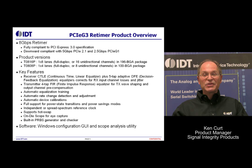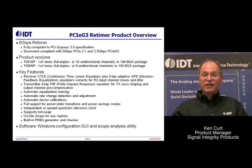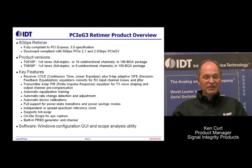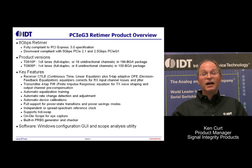At 8 gigabits per second, all these margins become very important. Our device has full support for automatic power saving states such as the L0S state that Intel has been promoting heavily. If the root complex and endpoint device go into a power down state, our device will follow that to achieve the lowest overall system power possible. Our retimers support either independent clocks or a common spread spectrum clock, so you have multiple options in terms of clocking.